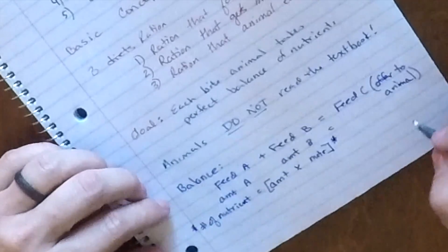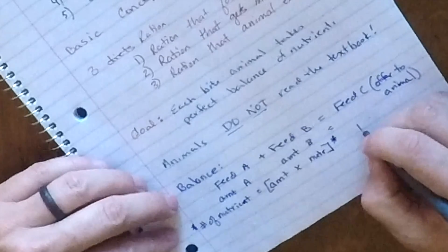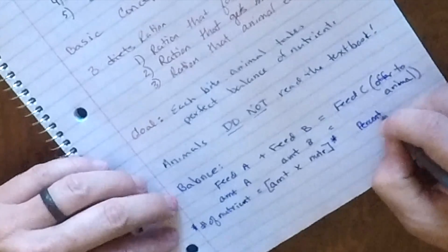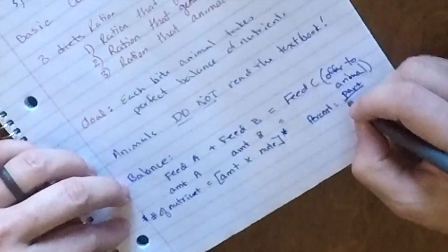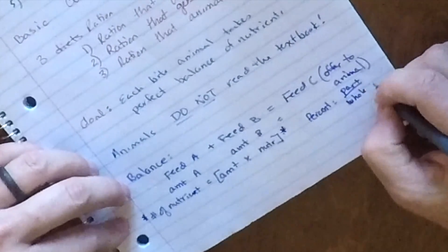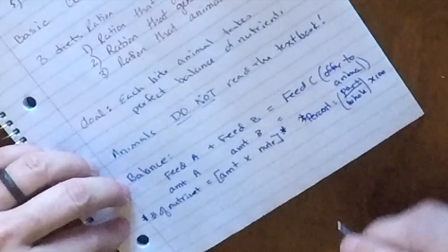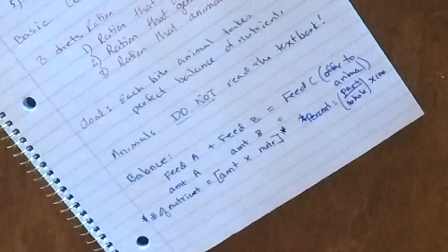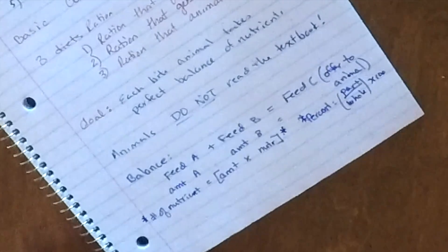The second formula to know is going to be a percentage. And that is where we take the part over the whole times 100. So these are our formulas that we will be working with quite a bit in this ration formulation module.